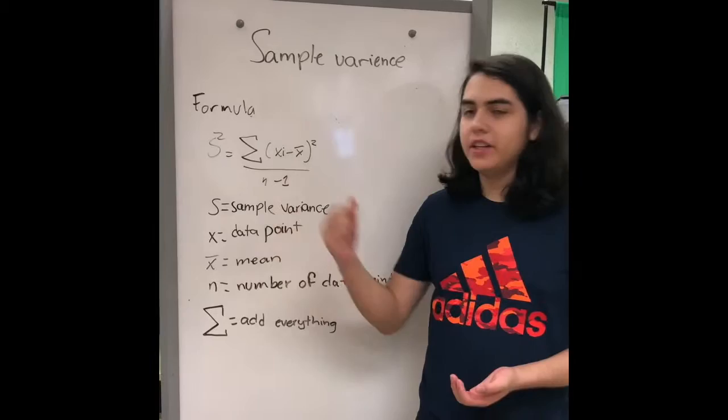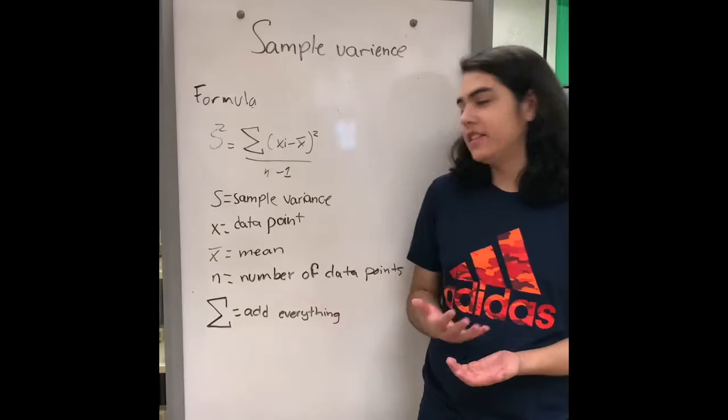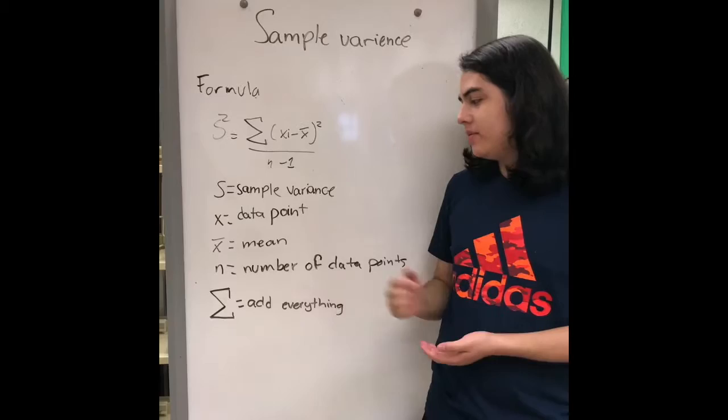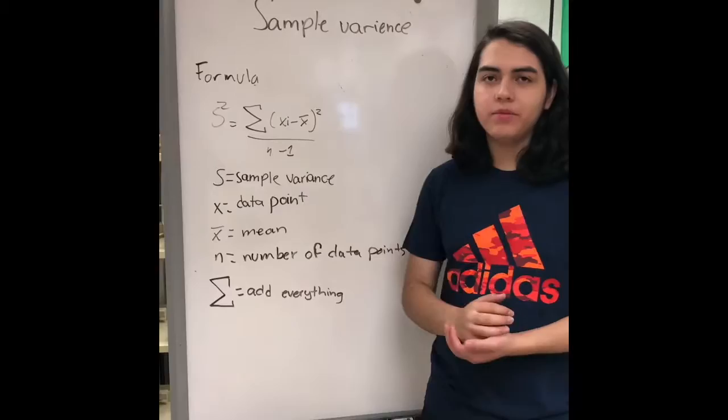And this is what each symbol represents. S represents the sample variance itself. X is a data point. X with a bar on the top is mean. And n is the number of data points. And this symbol, somatoria, means add everything.